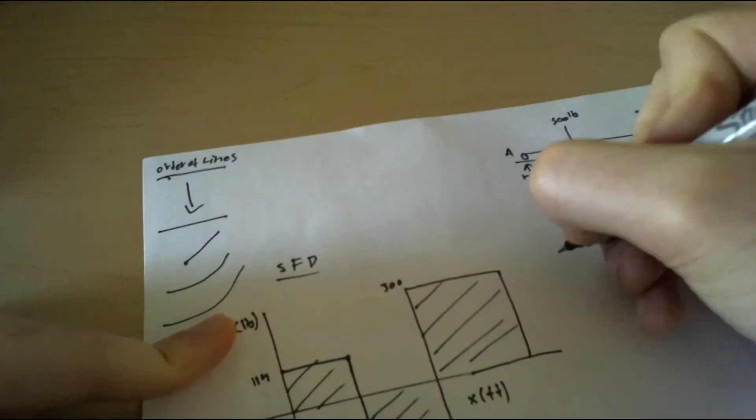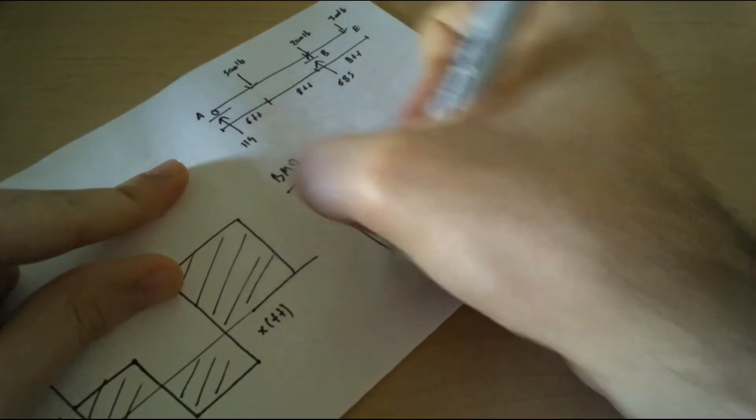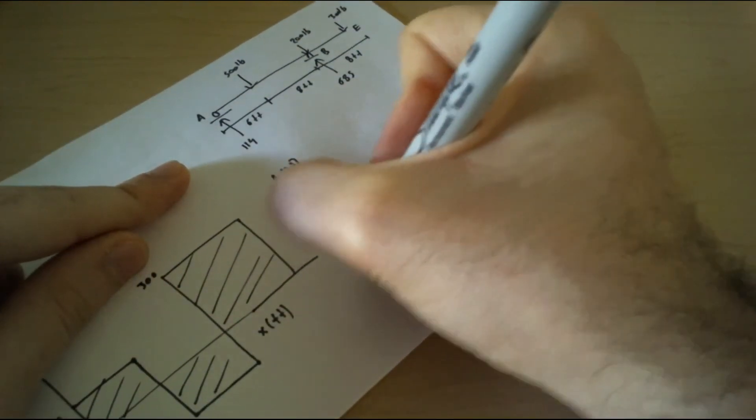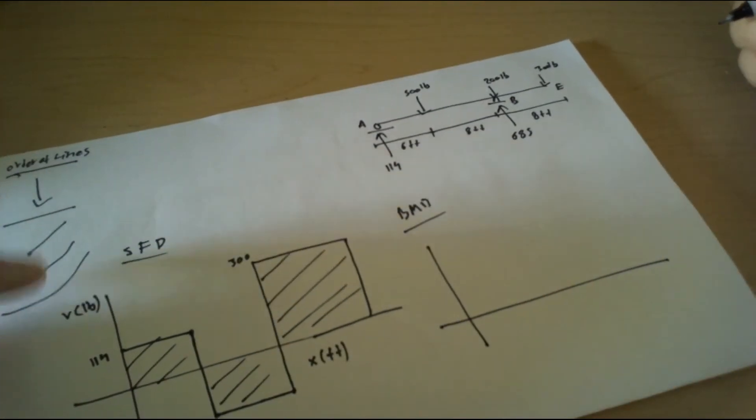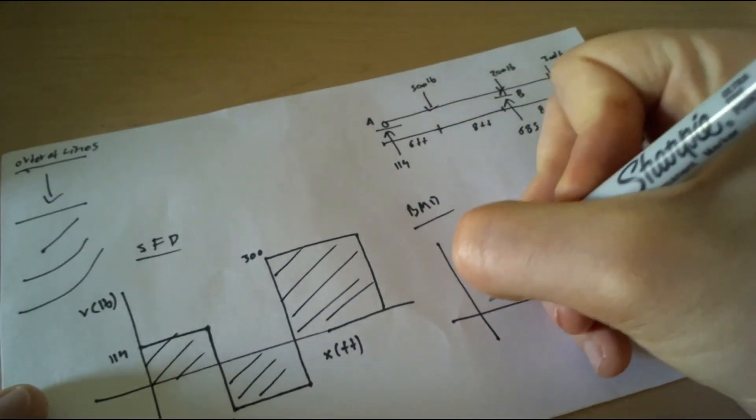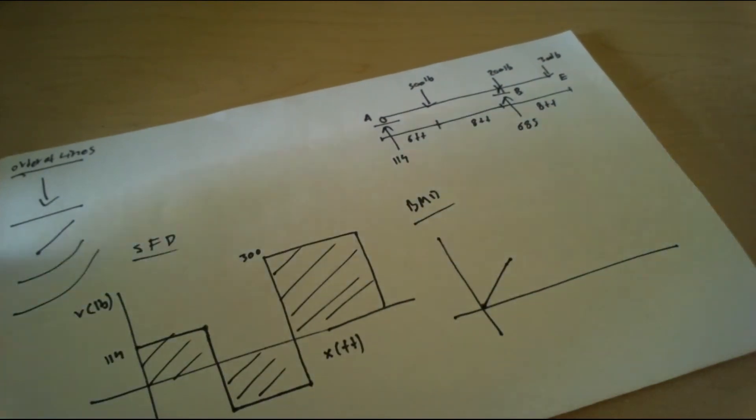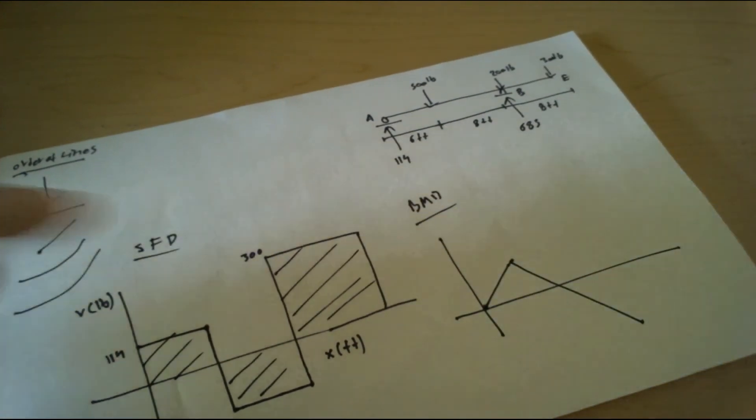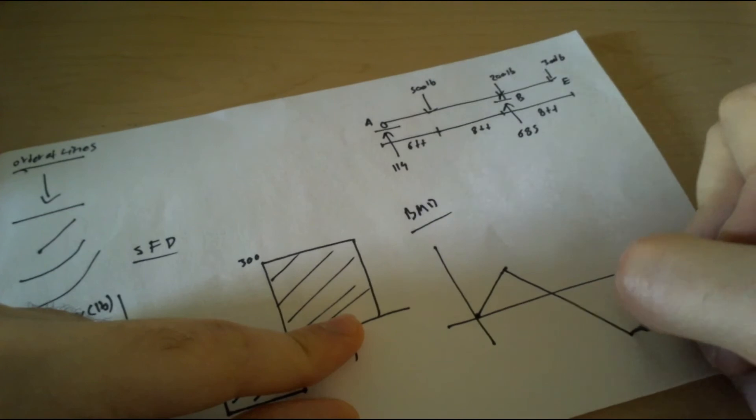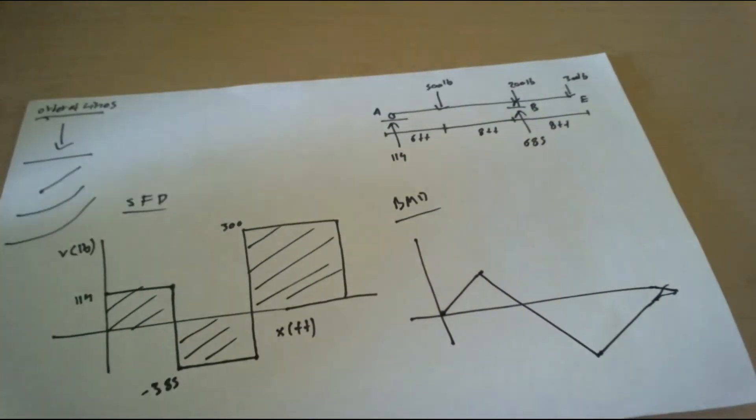For the bending moment diagram, the straight line becomes slant like this. And then again straight, like this. And then again straight, like this.